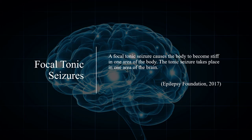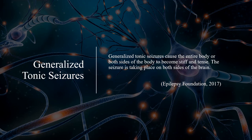A focal tonic seizure causes the body to become stiff in one area of the body. The tonic seizure takes place in one area of the brain. Generalized tonic seizures cause the entire body or both sides of the body to become stiff and tense. The seizure is taking place on both sides of the brain.